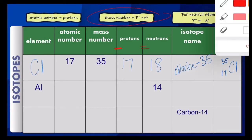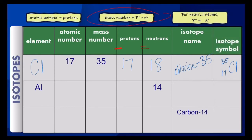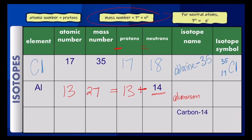Now see if you can find aluminum. Aluminum's atomic number is 13, so its proton number is also 13. This time we're given the neutrons, so to get the mass number all you have to do is add the protons plus the neutrons, which gives you 27 as the mass number. The isotope name is aluminum-27. The symbol is Al with 27 at the top representing the mass number and 13 at the bottom representing the atomic number.